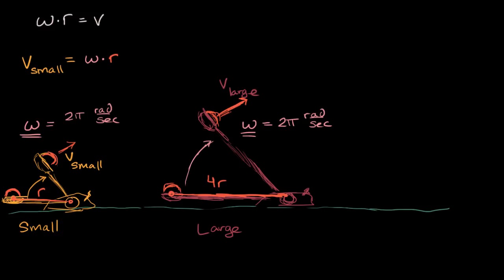And what's v sub large going to be? Well, v sub large is going to be equal to that same omega. So I'm talking about this particular omega right over here. So it's that same omega, but now our radius isn't r, it is four r. So we're talking about times four r. Or if we were to rewrite this, this would be equal to four times omega times r.